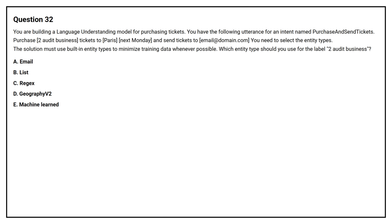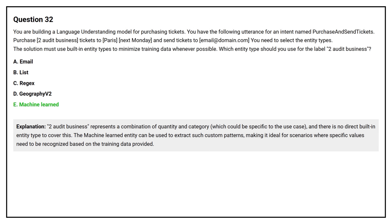Option A: Email. Option B: List. Option C: Regex. Option D: Geography V2. Option E: Machine Learned. The correct answer is Option E, Machine Learned. 'Two audit business' represents a combination of quantity and category which could be specific to this use case, and there is no direct built-in entity type to cover this. The Machine Learned entity can be used to extract such custom patterns, making it ideal for scenarios where specific values need to be recognized based on the training data provided.